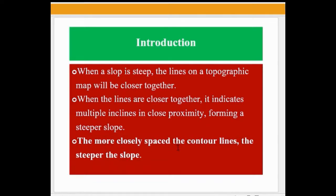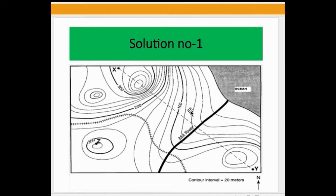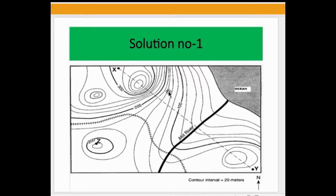The more closely spaced the contour lines, the steeper the slope. In this topographic map you can see some contour lines, a river, ocean, and index contours. To find the steeper slope, we apply the thumb rule: when you find closely spaced contour lines in a topographic map, that indicates a steeper slope.